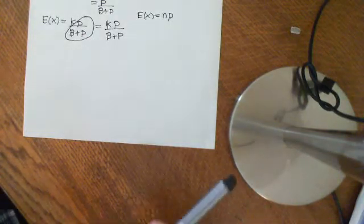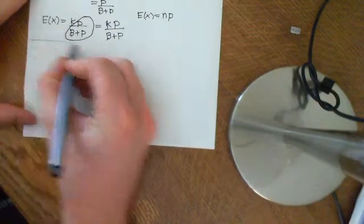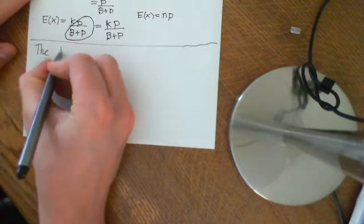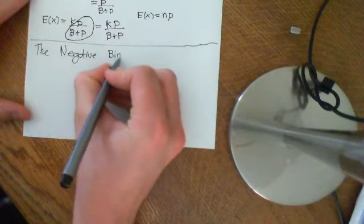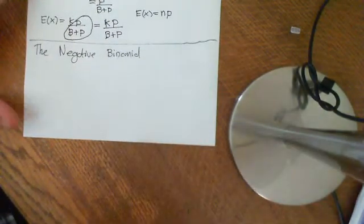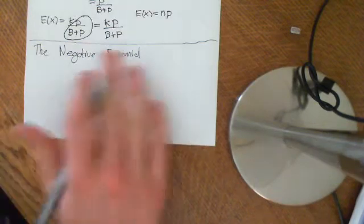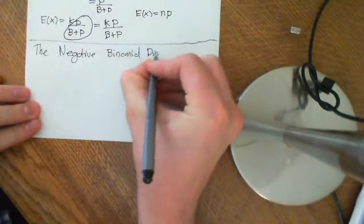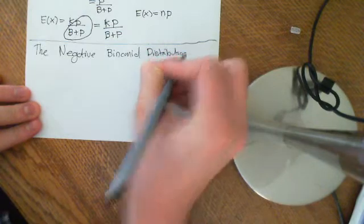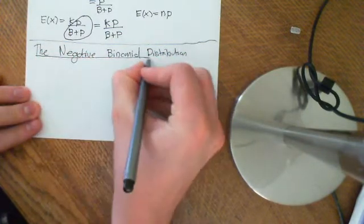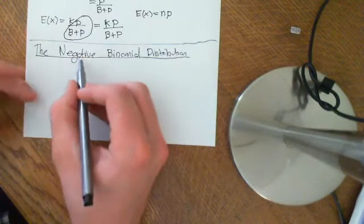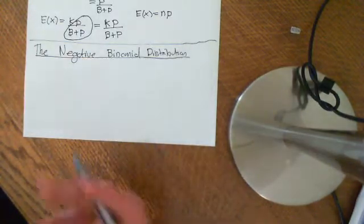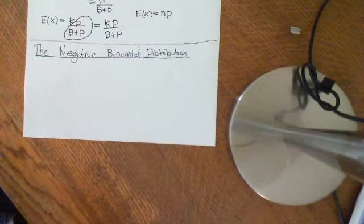This next video in the probability playlist is going to have the title The Negative Binomial Distribution. It's a bit of a misnomer because it's far more connected to the geometric distribution than the binomial distribution. The reason it's called the Negative Binomial Distribution is its connection to the binomial theorem — specifically the binomial theorem for negative powers. But it's far more connected, as far as probability is concerned, to the geometric distribution.